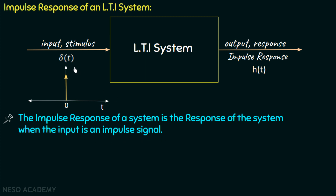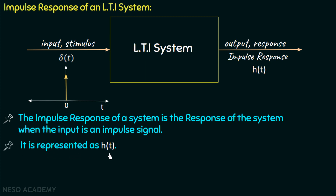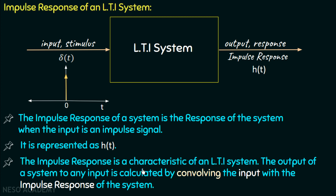Whenever we have an impulse as an input to the LTI system, the output we get is called the impulse response. The impulse response of an LTI system is represented as h, and it is a very important parameter of an LTI system. We use the impulse response to define the LTI system, and that's why the impulse response is considered a characteristic of an LTI system.